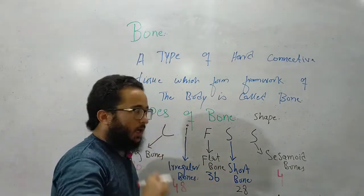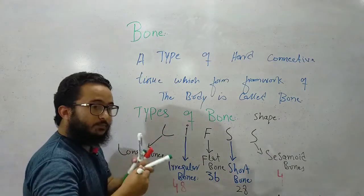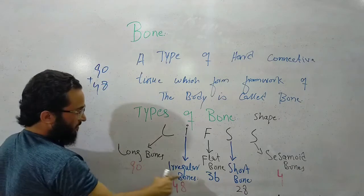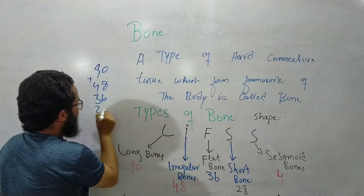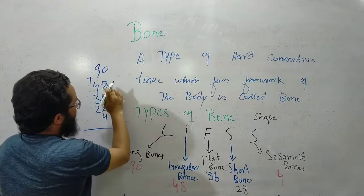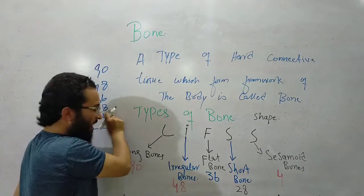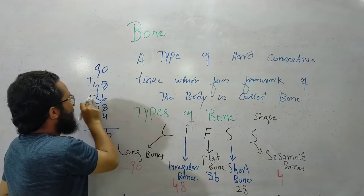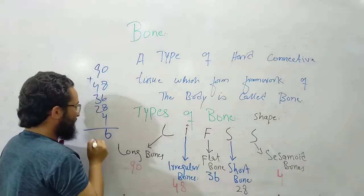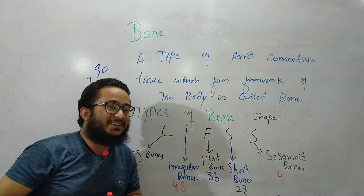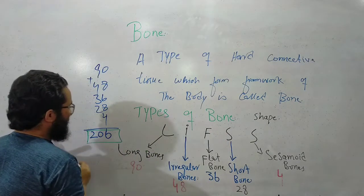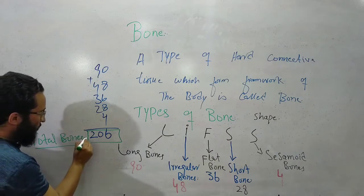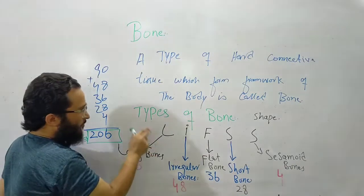Now the total bones. Long bones are 90, irregular bones, flat bones are 36, short bones are 26, and sesamoid bones are 4. Adding these: 90 plus 36 plus 26 plus 4 equals approximately 206 total bones.